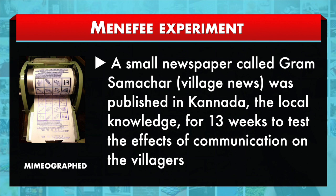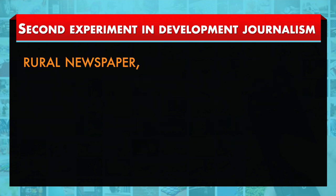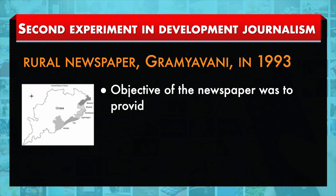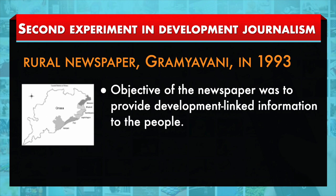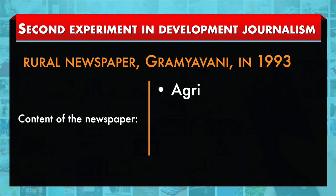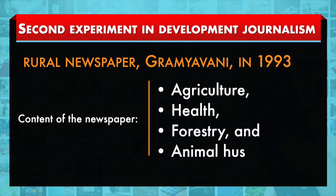The researchers found an increase in the information level of regular readers because of the newspaper. A researcher started a rural newspaper, Grammivani, in 1993, in Dalupodi, a village in Ganjam district of Orissa, to give information to rural people. The fortnightly newspaper reaching eight villages of the Panchayat continued for 16 months. The primary objectives of the newspaper were to provide development-linked information, covering agriculture, health, forestry and animal husbandry. The newspaper brought awareness among the villagers.